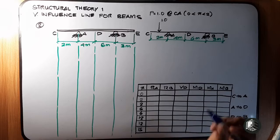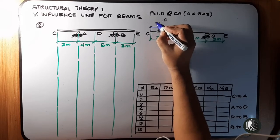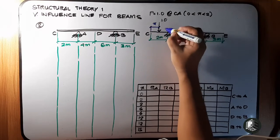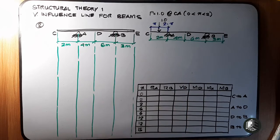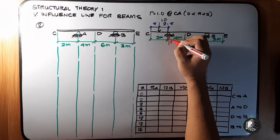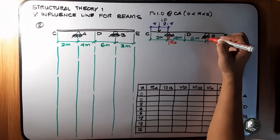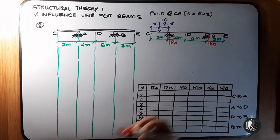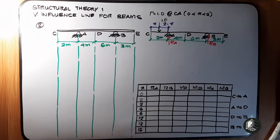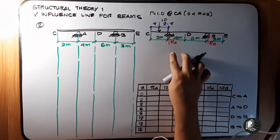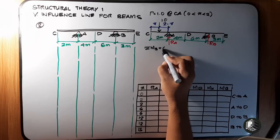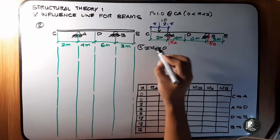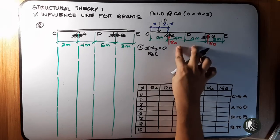The location of the load is X from C, or equivalently 2 minus X from A. We take the sum of moments to find the reactions at A and B, then we will find the shear at D and moment at D. Taking moments — RA multiplied by 10...